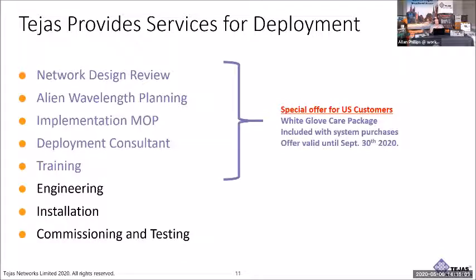When doing this, the two things you look at are: can I get it quickly, and can I get it cost effectively? On the quick part, you want a vendor that provides services for deployment. We'll do that network design review, alien wavelength planning, work up an implementation MOP with you, have a deployment consultant work with you, stage the equipment if you want it turned up for a much faster turn-up, and do the training for you. All of those are part of the white glove care package we offer in the US, included with all systems purchased up to September 30th of this year.